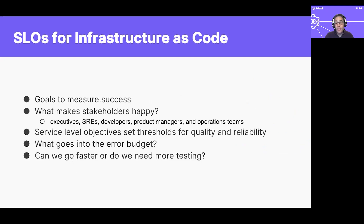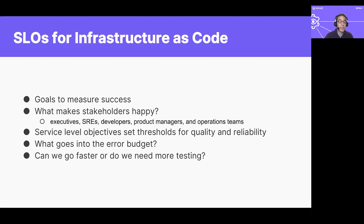Service level objectives set the thresholds for quality and reliability of your services. SLOs are the targets for SLIs and may be a goal or a range of values. They should specify how they're measured and the conditions under which they're valid. SLOs set explicit thresholds for how reliable your services should be, which provide all stakeholders within an organization a common language for measuring these goals. Once we start measuring our SLOs, we can determine if our users are happy with our reliability and if we can move faster or slow down as necessary to bring more safety to our systems — and do we need more testing? Something Chef can provide.